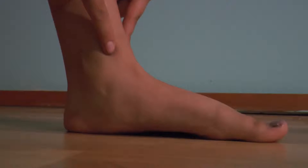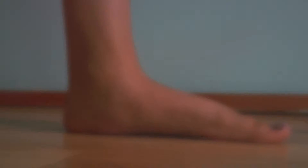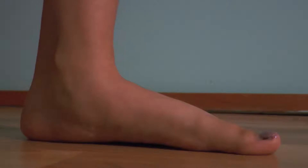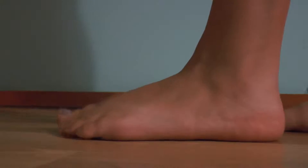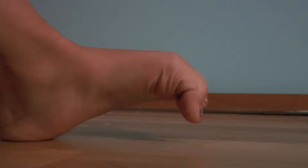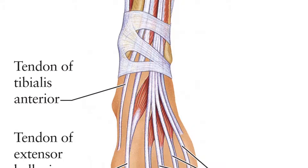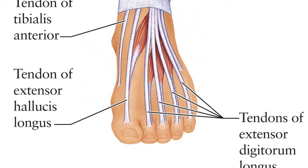After that come the extensors, which help the ankle raise the toes and initiate the movement of stepping forward. Finally, there are the flexors, which help stabilize the toes against the ground. Smaller muscles enable the toes to lift and curl. Tendons, which are tissues in the foot, connect muscles to the bones and joints.